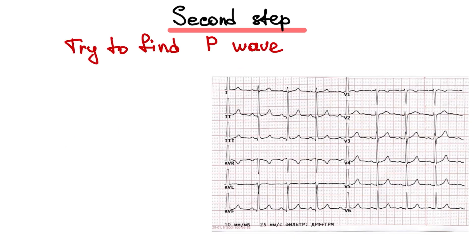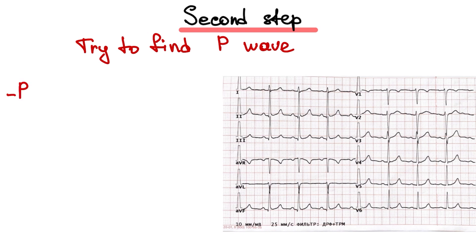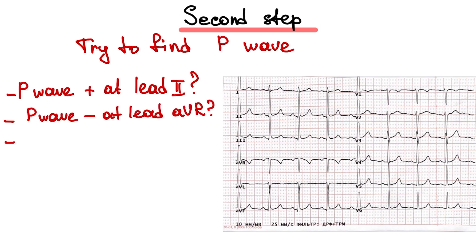Second step: try to find the P wave and answer these questions. Is the P wave positive at lead 2? Is the P wave negative at lead AVR? Is the P wave before the QRS complex? Is the P wave similar throughout one lead?